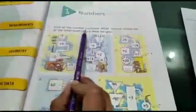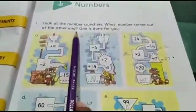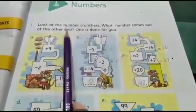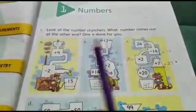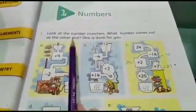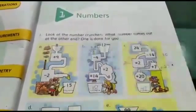Question number 1 is: Look at the number crunchers. What numbers come out at the other end? One is done for you. Number crunchers mean how we add the numbers. You have to tell what comes after these numbers. They have solved one for you. Now I am going to solve question number